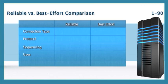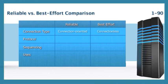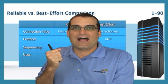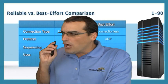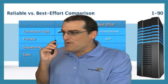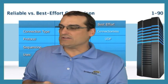Looking at a comparison chart with TCP on the left and UDP on the right: TCP is connection-oriented, meaning it is reliable — like a phone call, forming a connection with the other side and having reliability mechanisms like checking if the other party is still there.